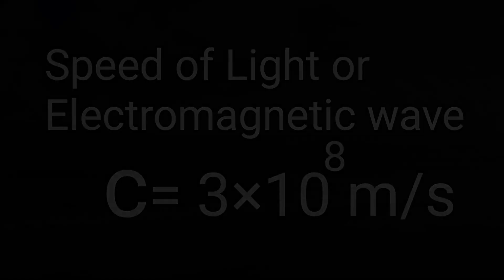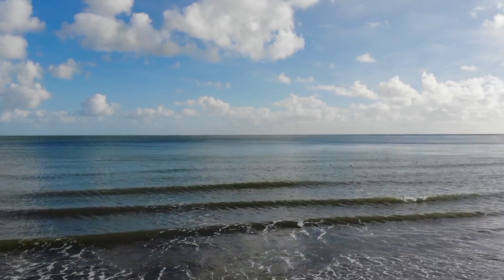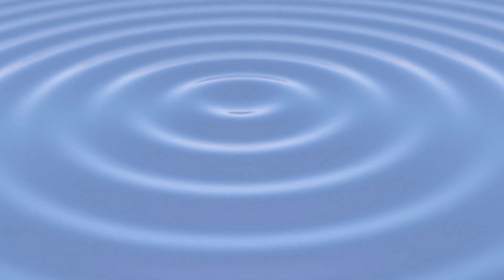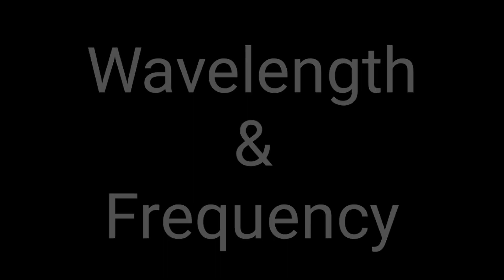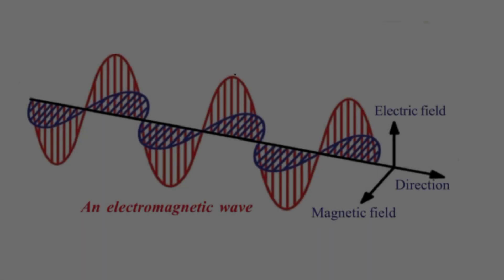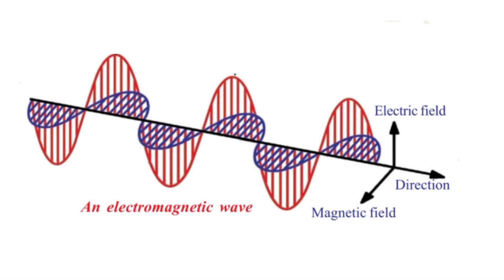Electromagnetic energy traveling through a vacuum behaves like a wave of water. Electromagnetic energy is characterized by wavelength and frequency. The wavelength of the wave is the distance from one wave peak to another or the distance between any two points in the same phase.